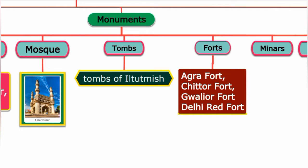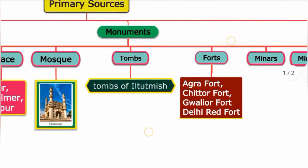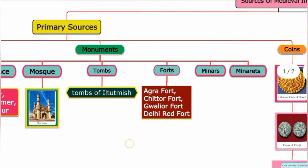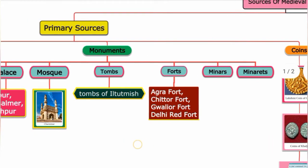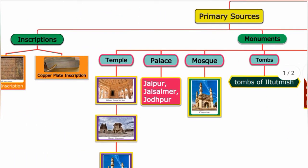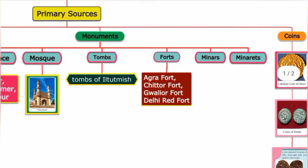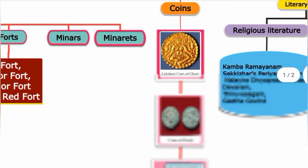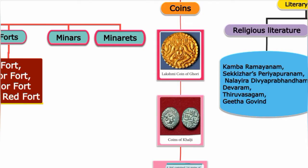Minars and minarets are also included as monuments. So in summary, monuments consist of temples, palaces, mosques, tombs, forts, minars, and minarets. Inscriptions include rock inscriptions and copper plate inscriptions. Coins are another primary source.